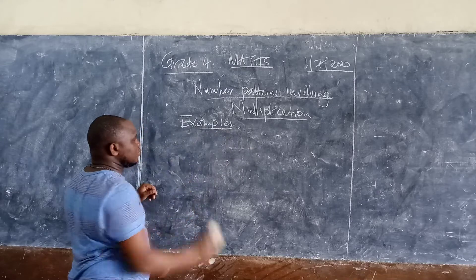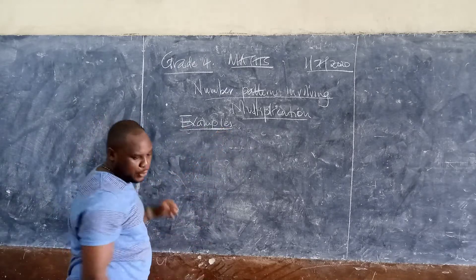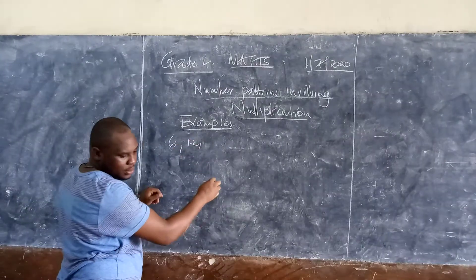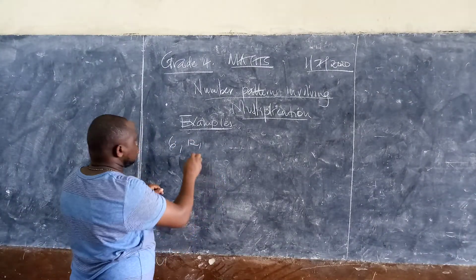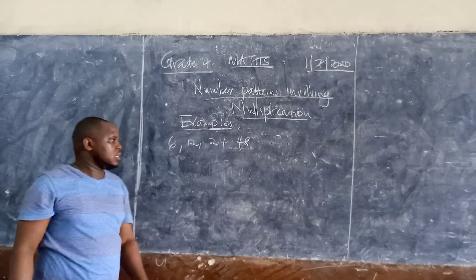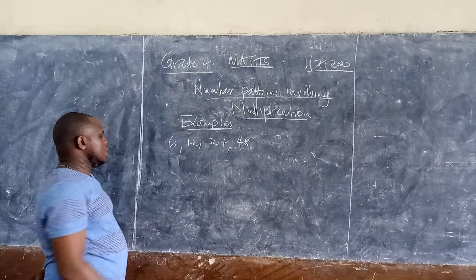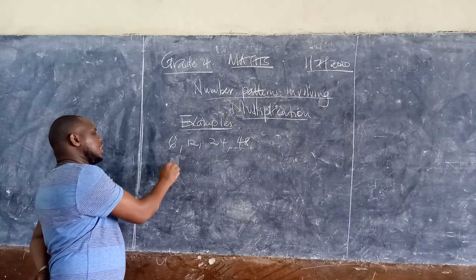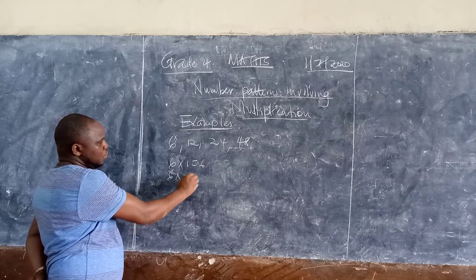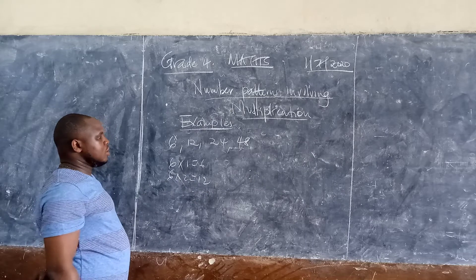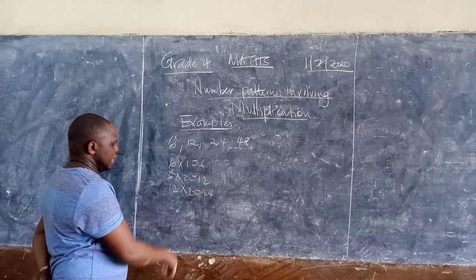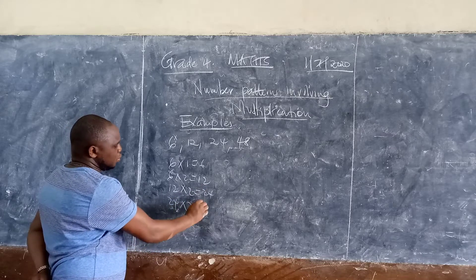Let me pick for you another one that seems to be very simple, learner. We can have six, twelve, twenty-four, and forty-eight. So for us to get the second number, six times one you get six. Then six times two, you get twelve. From there, twelve times two, you get twenty-four. And then twenty-four times two, forty-eight.